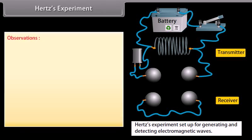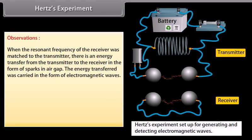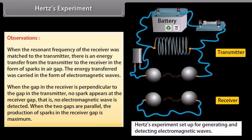Observations. When the resonant frequency of the receiver was matched to the transmitter, there is an energy transfer from the transmitter to the receiver in the form of sparks in air gap. The energy transferred was carried in the form of electromagnetic waves. When the gap in the receiver is perpendicular to the gap in the transmitter, no spark appears at the receiver gap. That is, no electromagnetic wave is detected. When the two gaps are parallel, the production of sparks in the receiver gap is maximum.